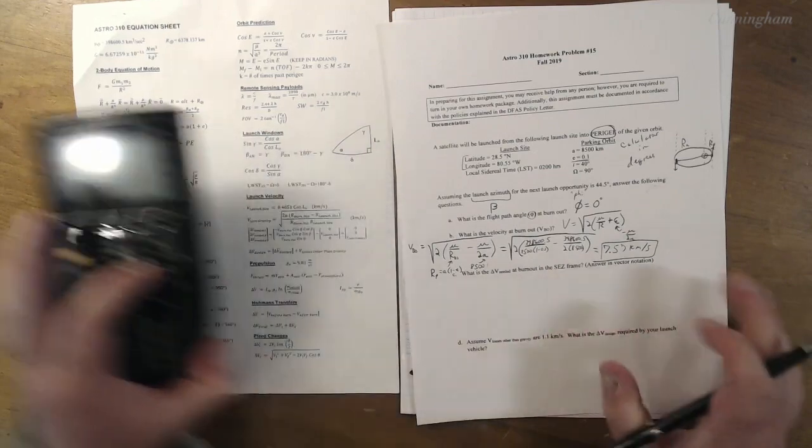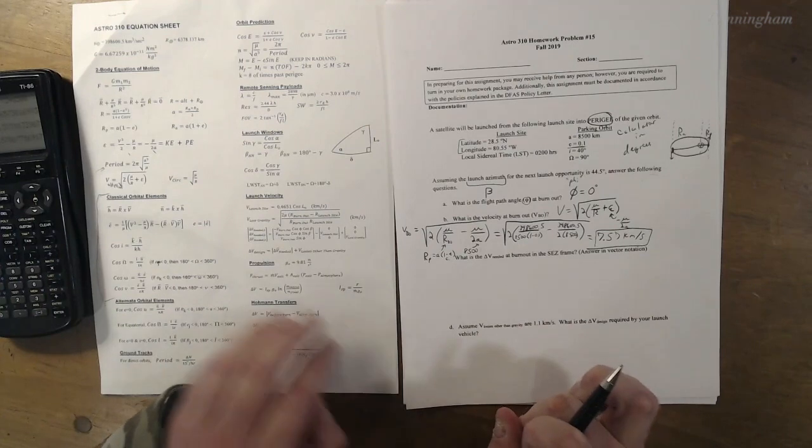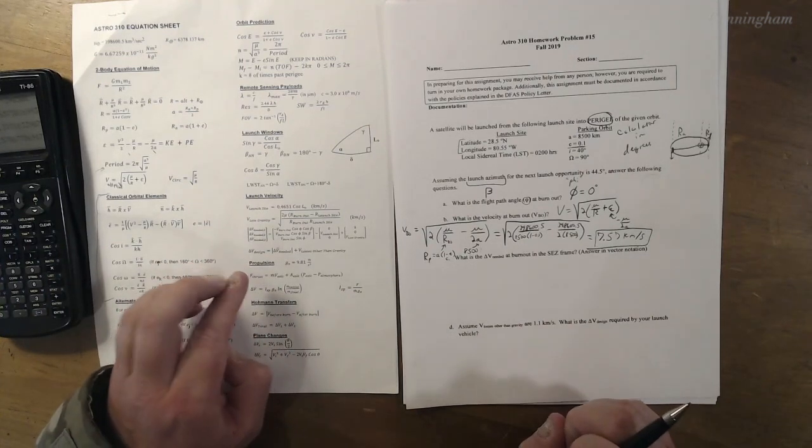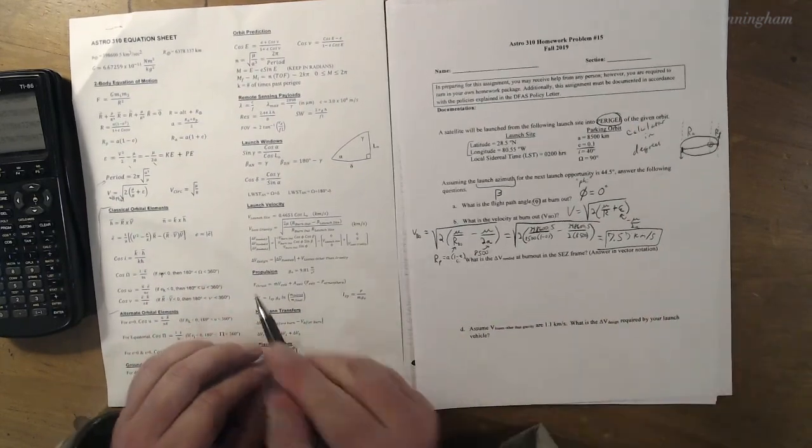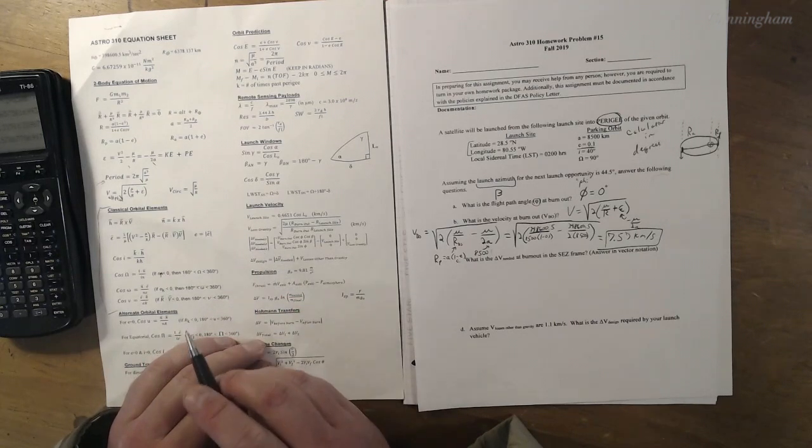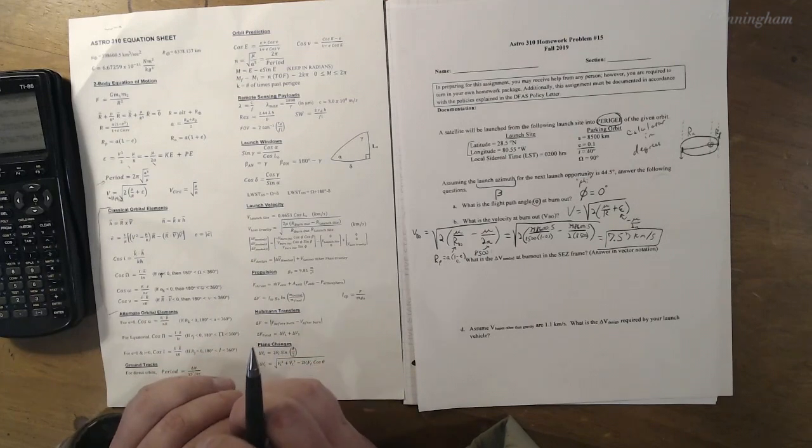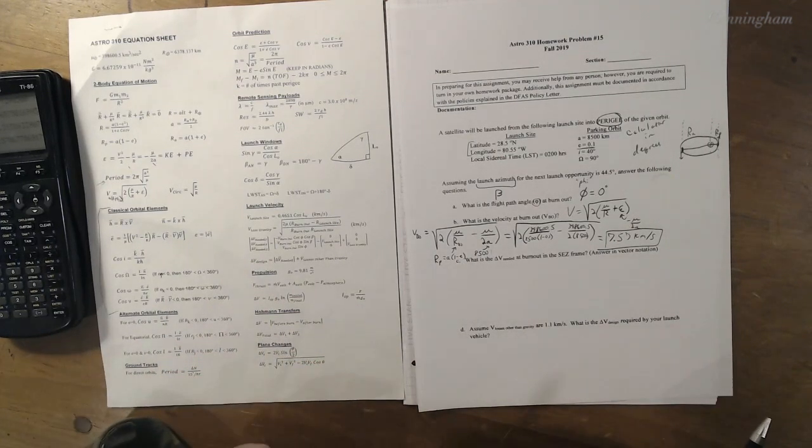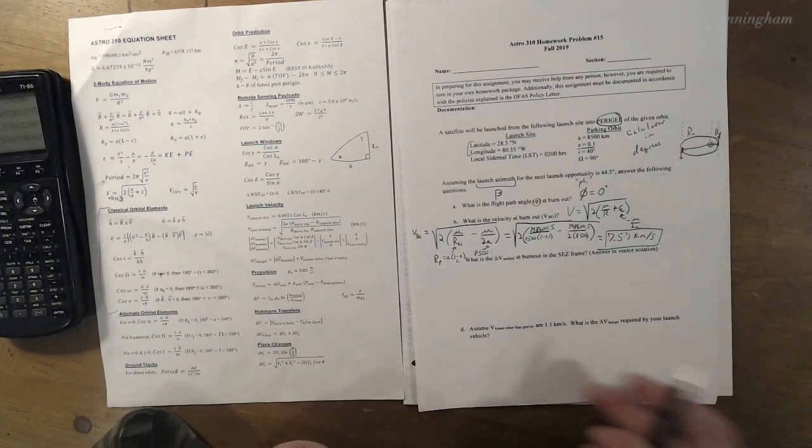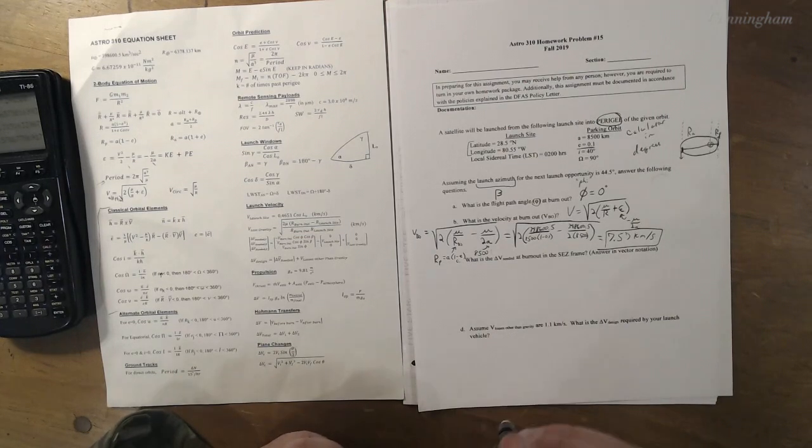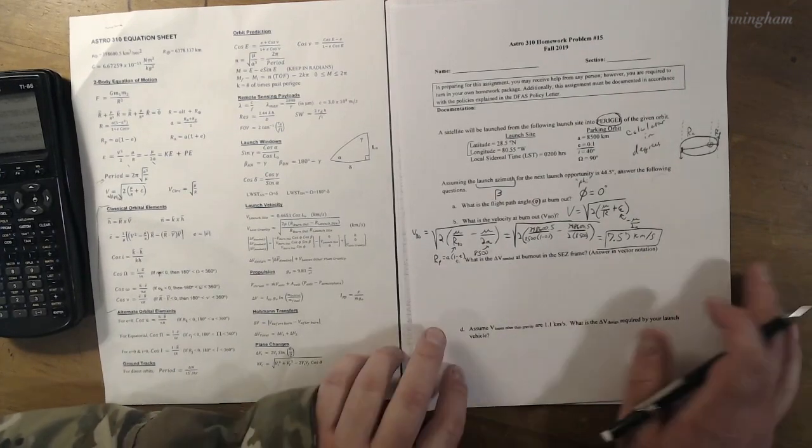That makes sense. That's 7.5 kilometers per second or so. That is very typical for LEO. Now, what takes a little more calculation is this delta V needed at burnout. We break it up into the three vectors: south, east, and zenith pointing. That is your topographic horizon coordinate system.